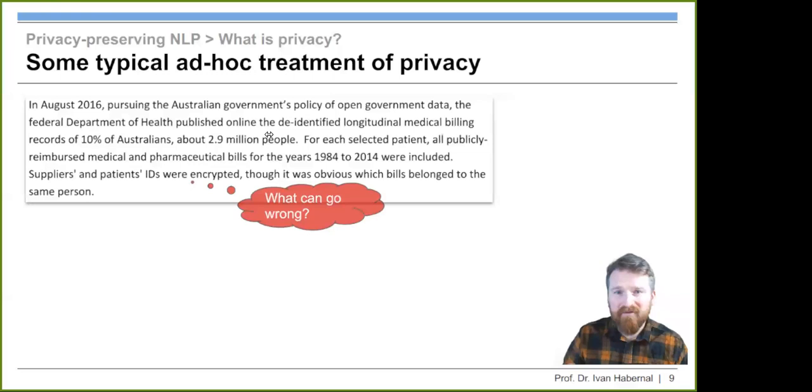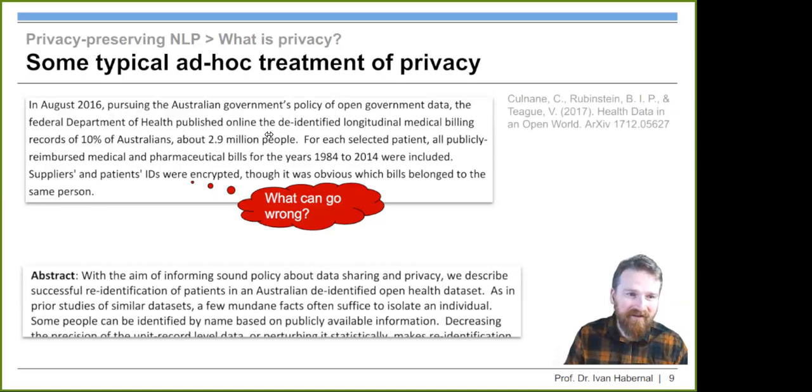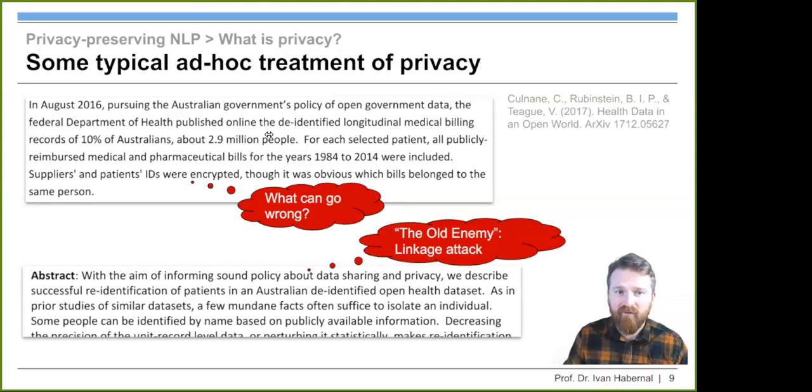Now you've seen this linkage attack. You might be guessing what can go wrong here. Unfortunately, there was this paper a year later showing that a few mundane facts often suffice to isolate an individual. They were able to reveal, to extract the original names of the real patients by using the plain old linkage attack. Using some third-party information or background information, you can undo this privatization and break the privacy. This was a really bad use case here.